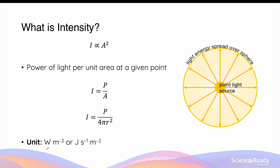The unit for intensity is related to this formula. Recall that the SI unit for power is watts or joules per second, and since we're dividing by the area over which the light is shining, the unit for intensity will be watts per meter squared, or we can write this as joules per second per meter squared. Again, the units watts and joules per second are equivalent in physics.